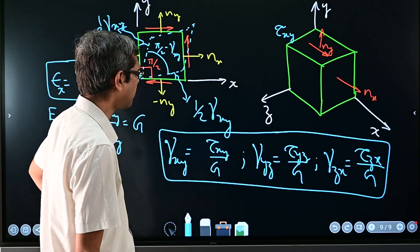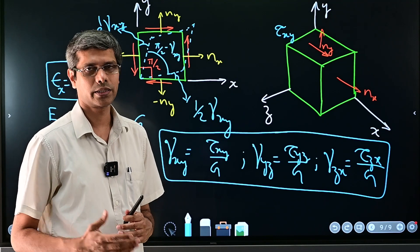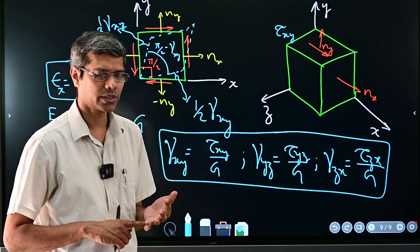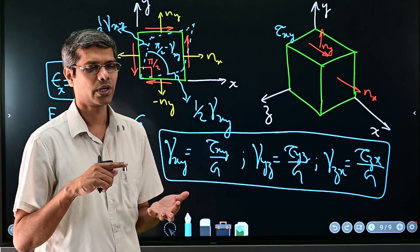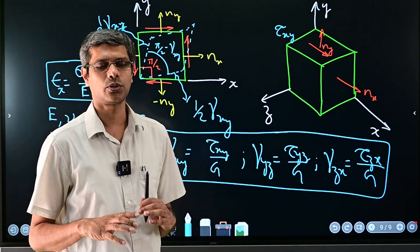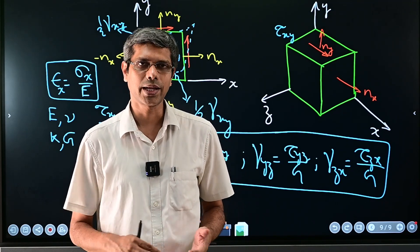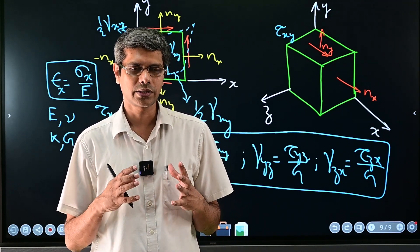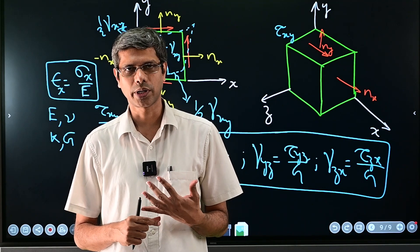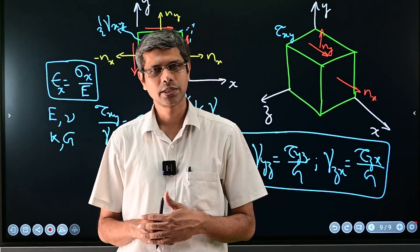So this much of definition I think should be fine roughly to think about what shear strain is and shear stress. So we know what is normal stress, what is normal strain, we know what is shear stress, what is shear strain, and now we are in a position to see and define in fact what is the general state of stress at a given point. And that we will take up in the next unit, that is the second unit. See you in the next unit.